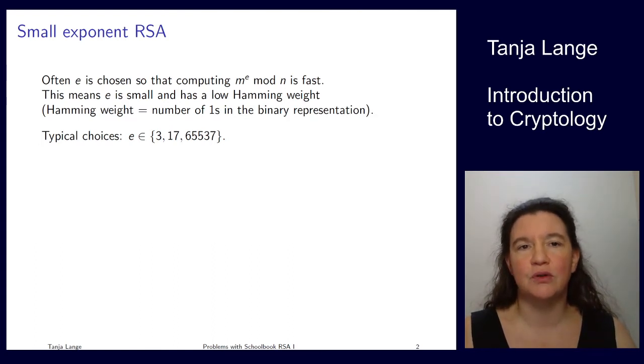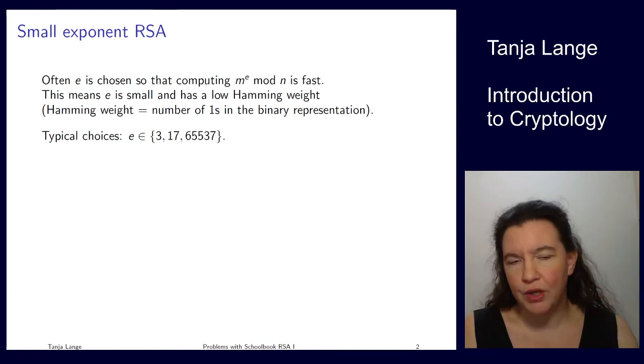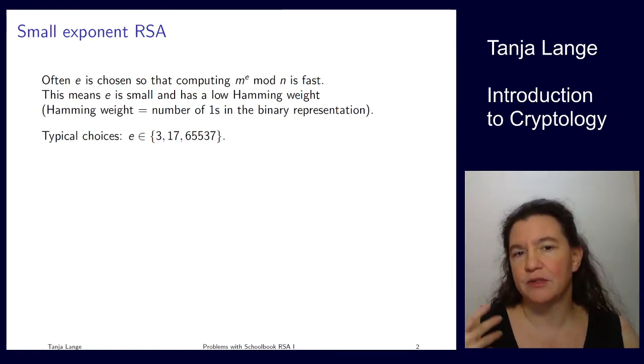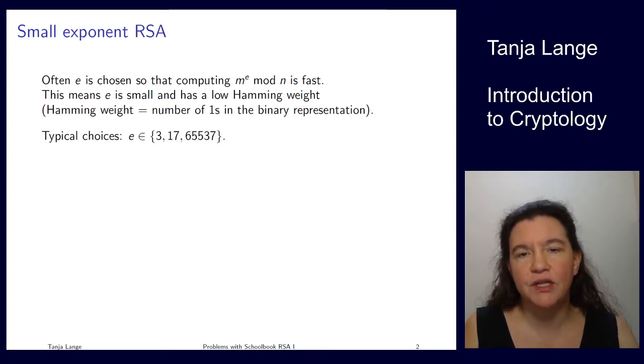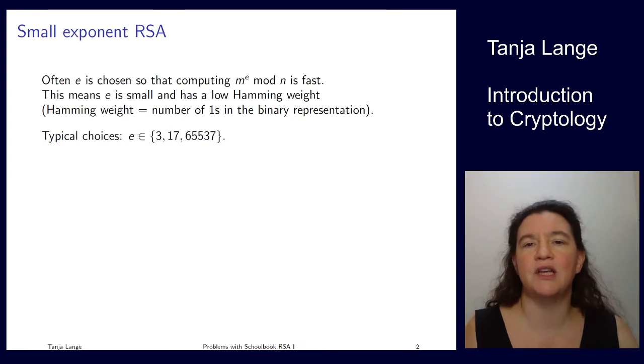Okay, so let's start with something which is called small exponent RSA problems. So in order to speed up the computation, it is common to use an e which is small. So small in absolute value, for instance 3 or 17, but also small in Hamming weight. So Hamming weight is the number of ones in the binary representation. Every bit in the representation costs a squaring, and every one in the representation costs an additional multiplication.